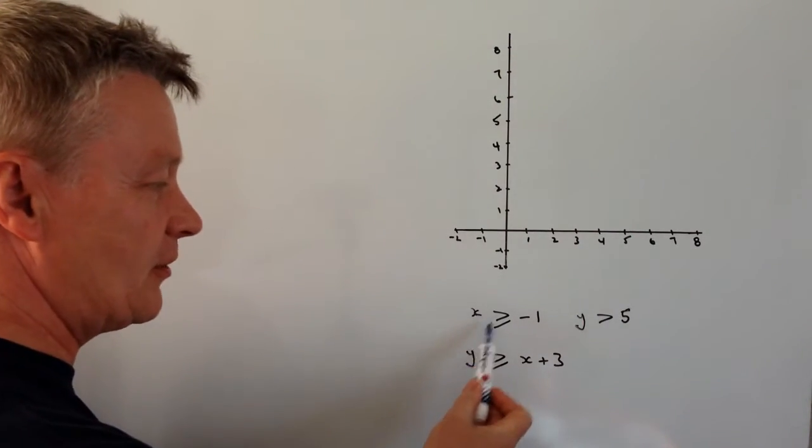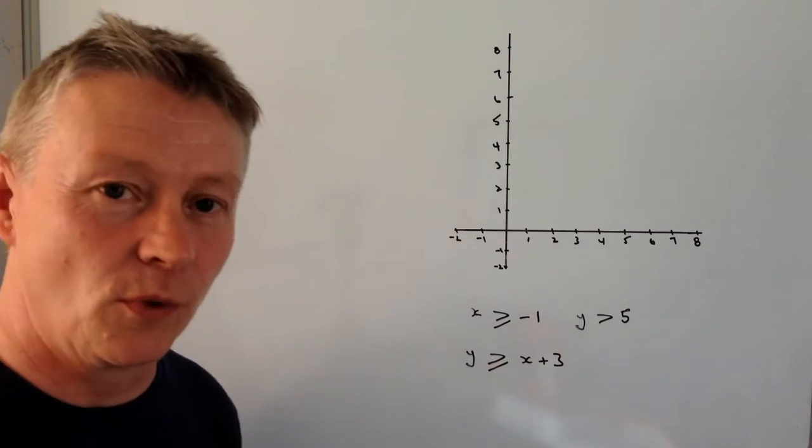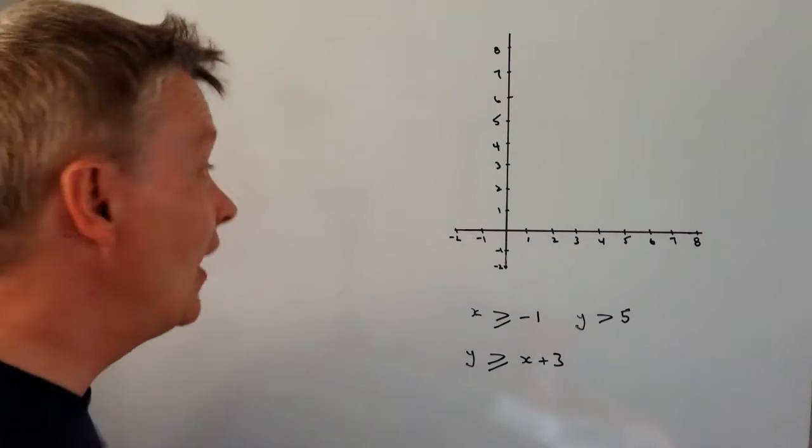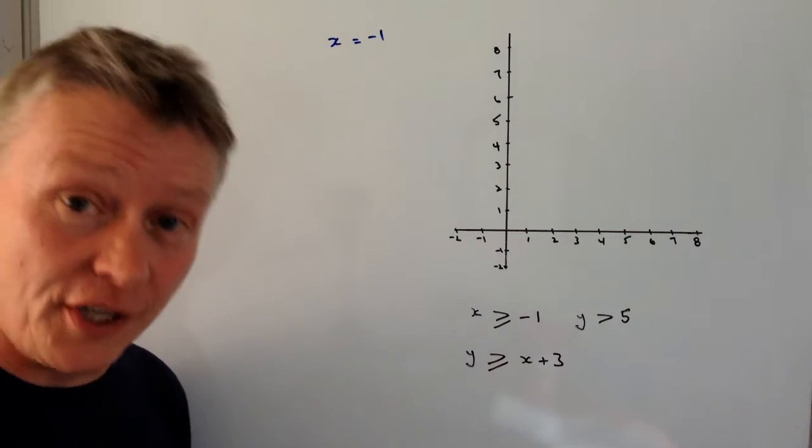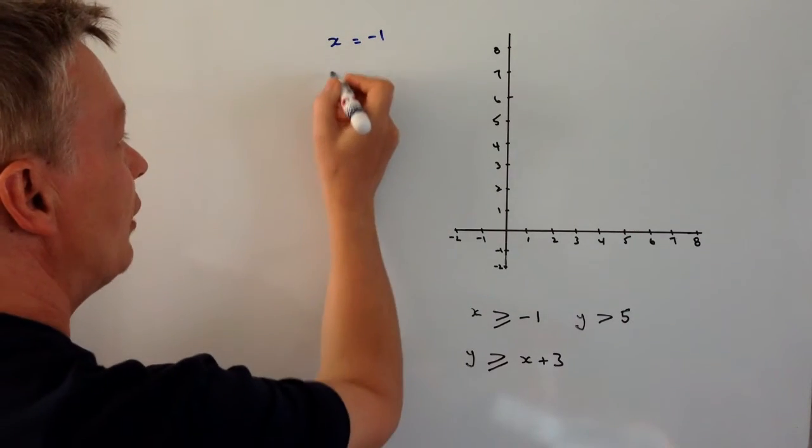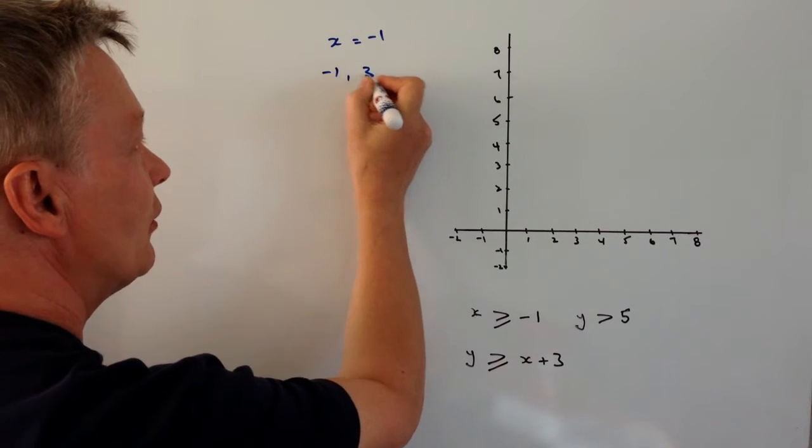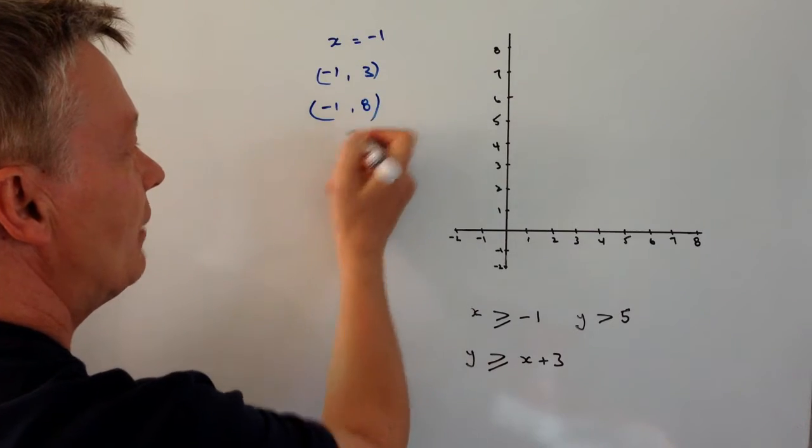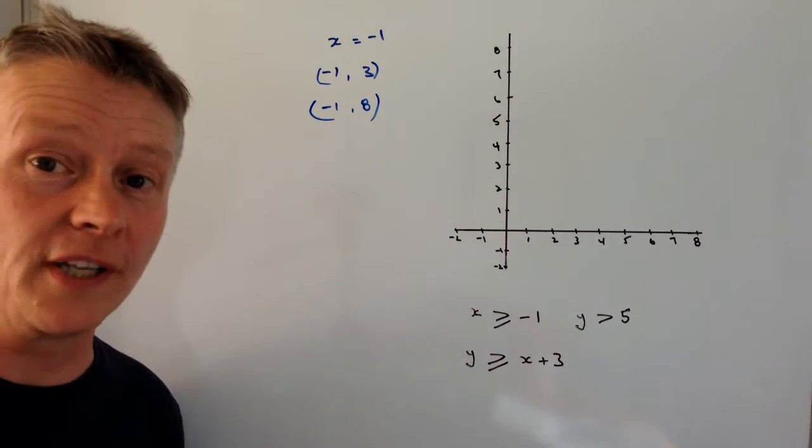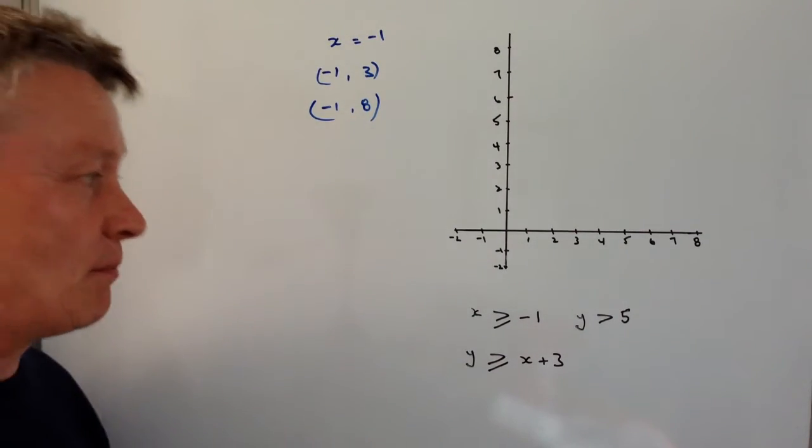So the first thing is we've got X is greater than or equal to minus 1. Well, we need to just establish where X equals minus 1 before. If I look at the first video, you'll see all I do really is I just plot a couple of points: minus 1, 3 or minus 1, 8. It doesn't really matter because all of these points is where X equals minus 1.